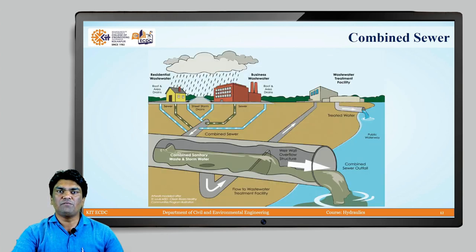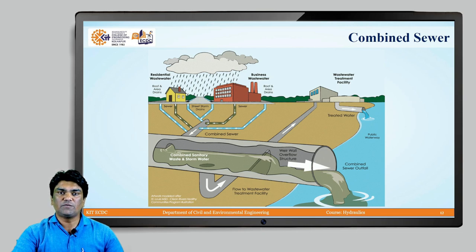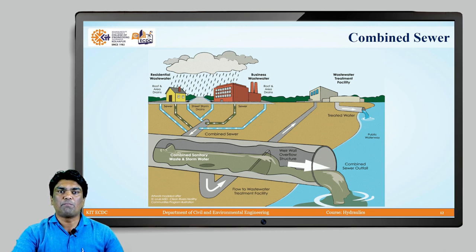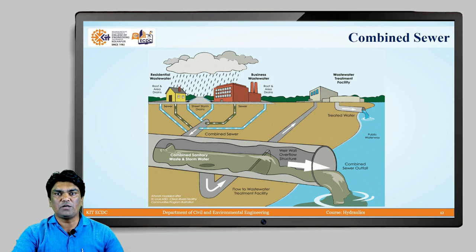The next type is the combined sewer. In this system, the sewage collected from household and industrial areas is collected in the same sewer line along with storm water collected from roofs and streets. It combines sewage and storm water, which is why it is called a combined sewer. The collected quantity is taken to the sewage treatment plant, treated, and the treated sewage is then disposed off into water bodies.